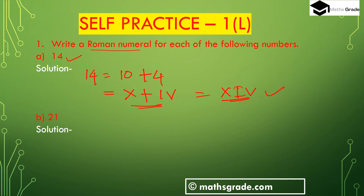Question 1, part (b): 21. We can write 21 as 20 plus 1, and 20 is 10 plus 10. In Roman numerals, 10 is X, so 20 is XX. Adding 1, which is I, gives us XXI. So 14 is XIV and 21 is XXI.